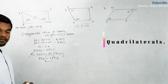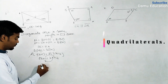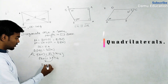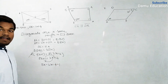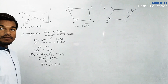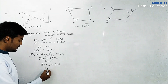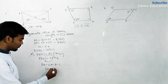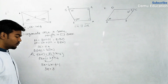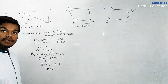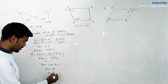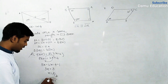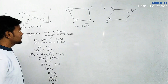Shifting terms: 5x minus 2x equals 4 minus 1, so 3x = 3, therefore x = 3/3 = 1. We have found x = 1.